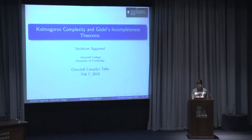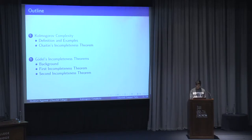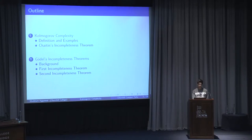Today I'm going to talk about Kolmogorov complexity and how it's used to prove Gödel's incompleteness theorems. For the outline, first I'll go into the definition of Kolmogorov complexity with a few examples. Then I'll move on to Chaitin's incompleteness theorem, which is the major result I'm presenting today — a surprising complexity barrier on information. Then I'll cover Gödel's incompleteness theorems and provide proof sketches using Chaitin's incompleteness theorem as a starting point.